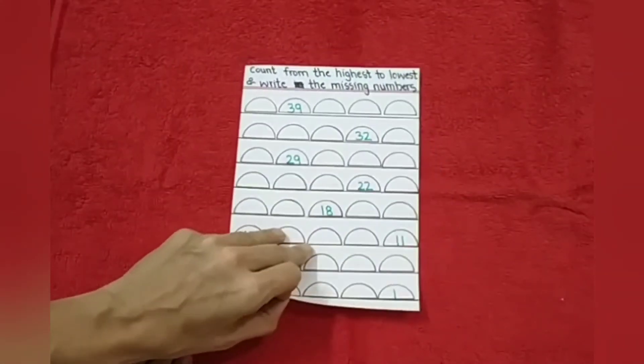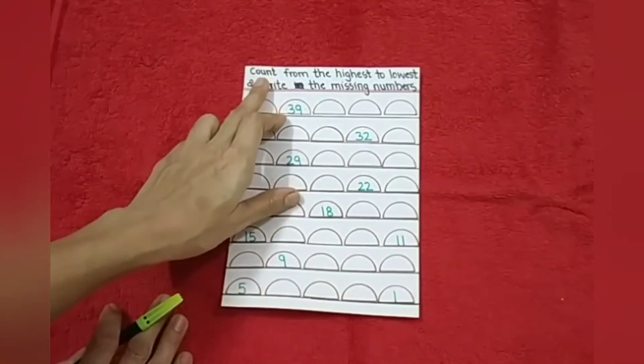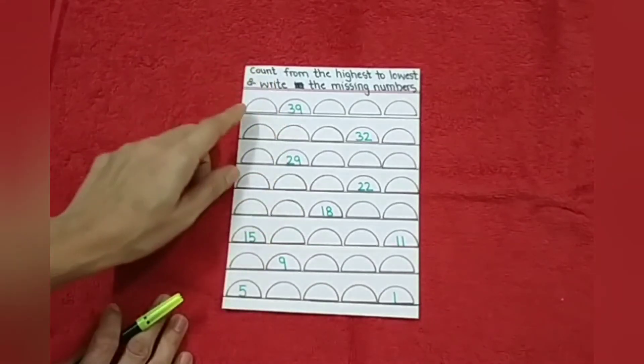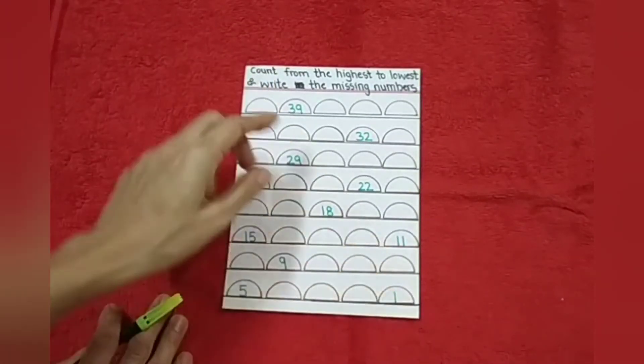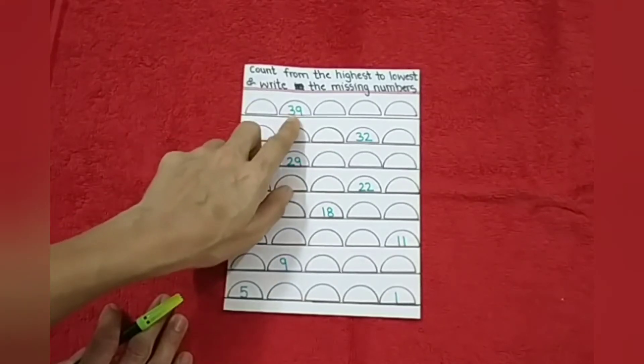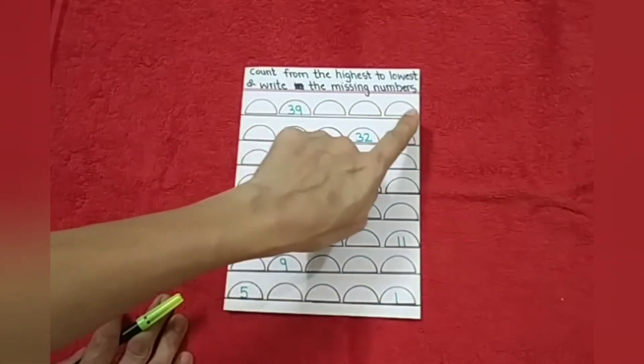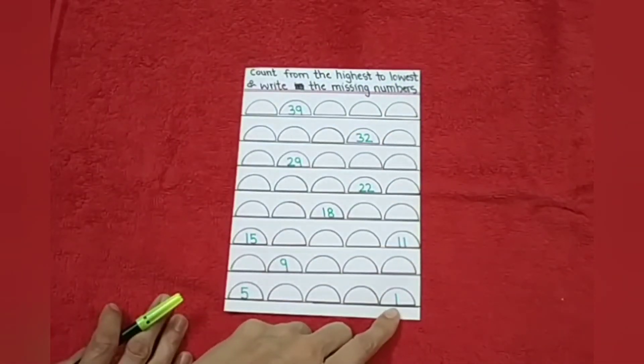And the last one is backward number. So now here, they have to go backward. The number will start by 40. After 40, 39, 38, 37, 36 and so on till the 1.